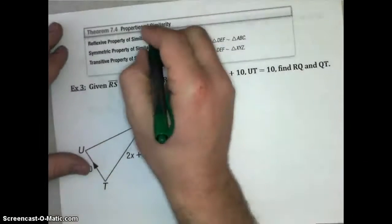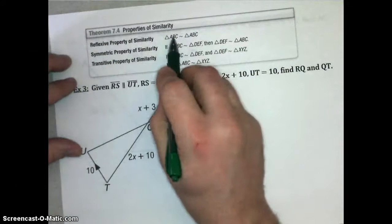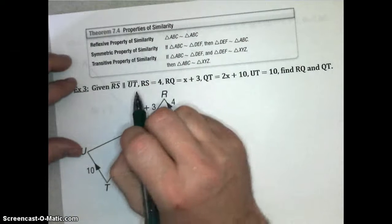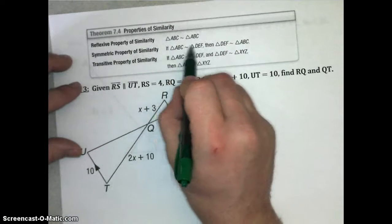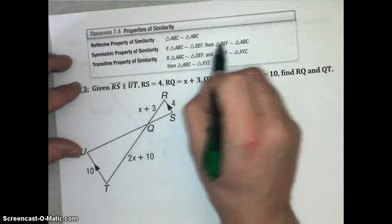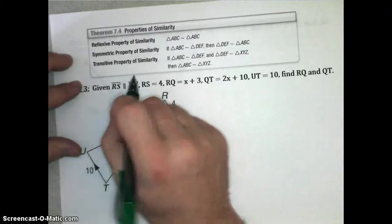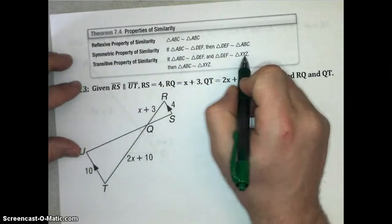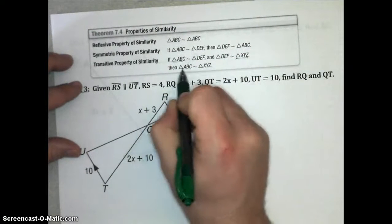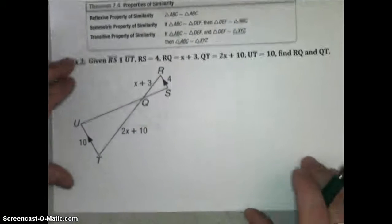All right, we have properties of similar triangles. The way we have properties of equality or congruence, we have our reflexive property of similarity, and that's just any figure is similar to itself. All right, we have symmetric property of similarity, which says if ABC is similar to DEF, then if you turn it around, DEF is similar to ABC. And the transitive property of similarity also is true. If ABC is similar to DEF and DEF is similar to XYZ, then ABC is similar to XYZ. Okay, and so some of those properties might come in handy later.